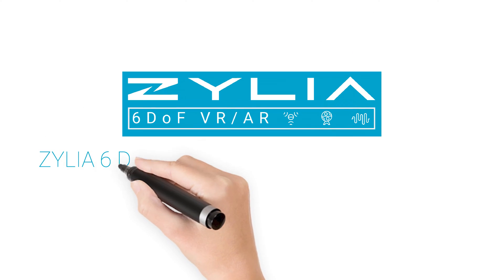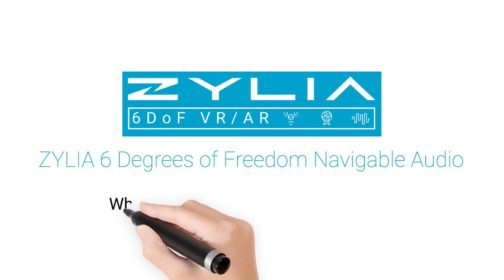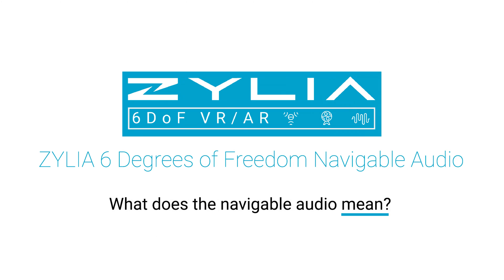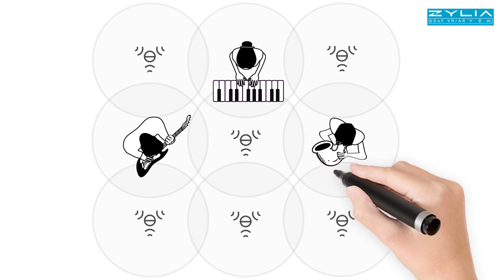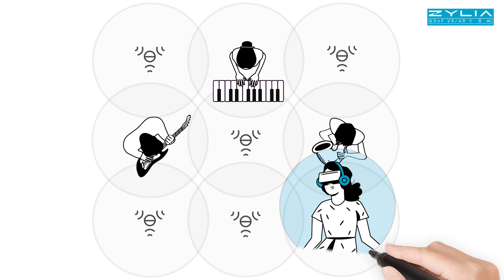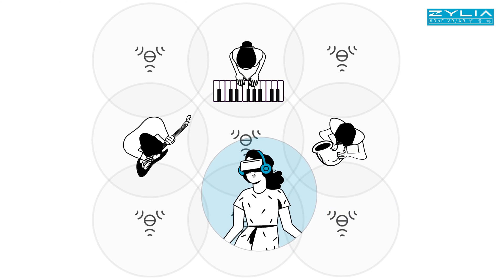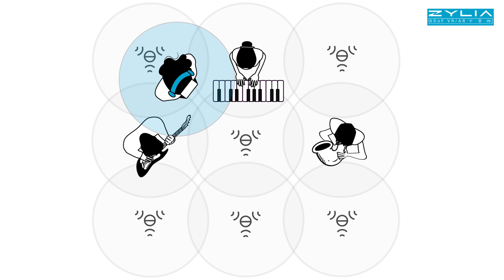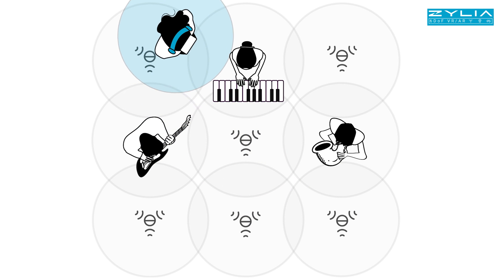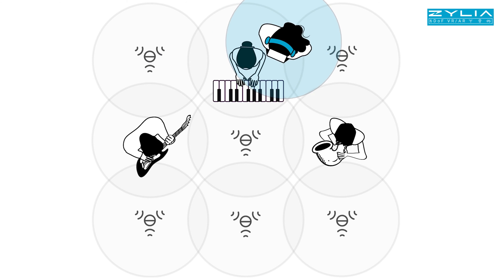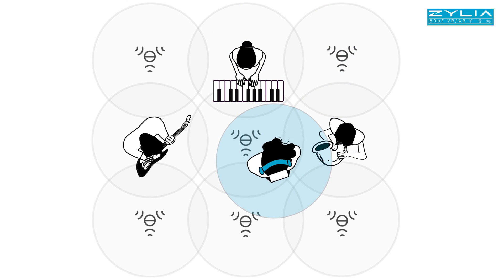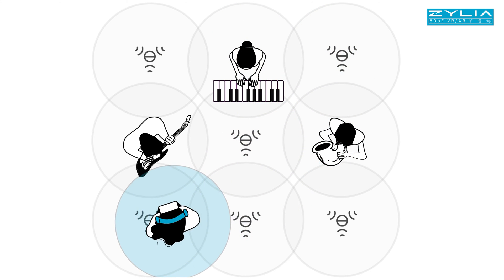Zillia 6 Degrees of Freedom Navigable Audio. What does navigable audio mean? It means that the listener can move freely within a three-dimensional virtual space. And in this space, the sound they hear changes smoothly as well, corresponding to the position of their ears — its intensity, direction, height, and even timbre — exactly like in real life.